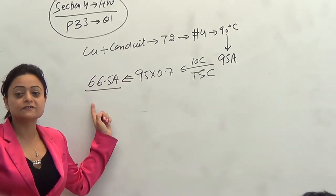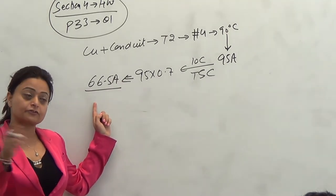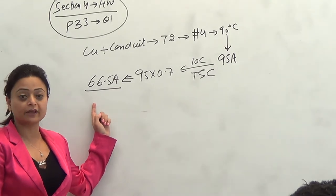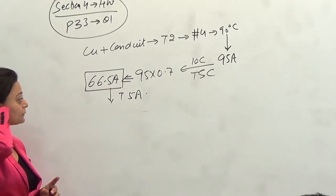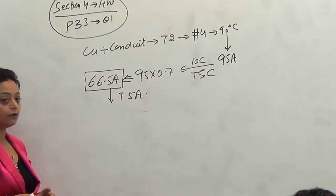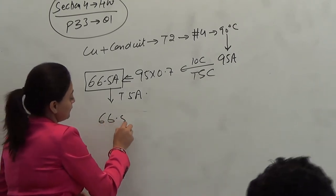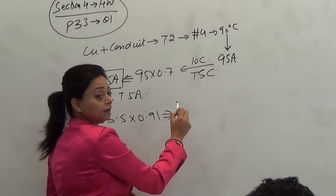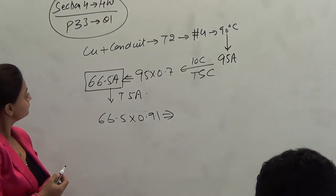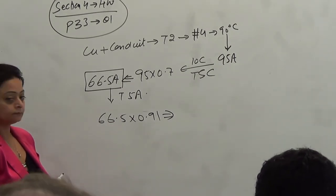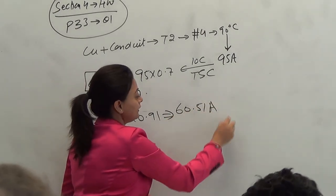I would stop right here if I was not told anything about ambient. Because it says that the ambient of this room is beyond 30. In this case, it's 40. I gotta go one step further, which is Table 5A. So, Table 5A, I'd like each one of you to go there. Look for 90 column and 40 row. It's 0.91. So, 66.5 times 0.91. What do you get? 60.51 will be my final answer.